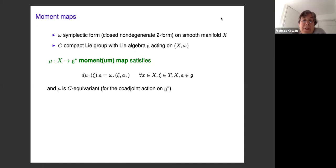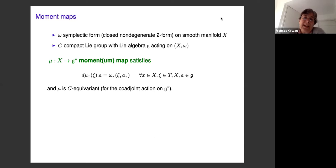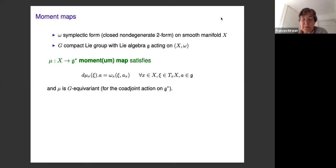This map is equivariant with respect to the given action on X and the coadjoint action on the dual of the Lie algebra, and it satisfies the differential equation saying that if you take the component of the moment map mu in the direction of any vector a in the Lie algebra, then the derivative of that component is dual — with respect to the duality defined by the symplectic form — to the infinitesimal action of that Lie algebra element at x. In other words, this component of the moment map is a Hamiltonian function for the infinitesimal action.